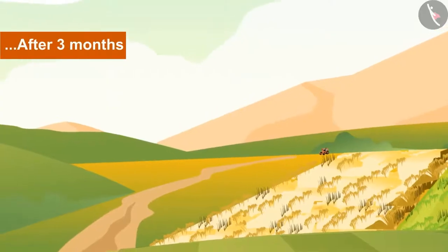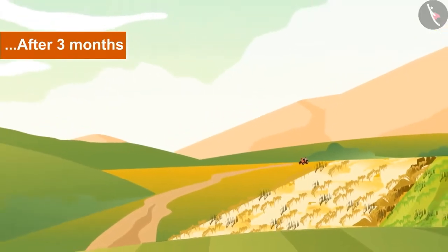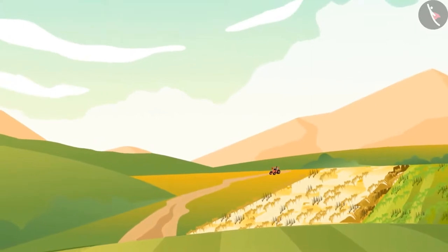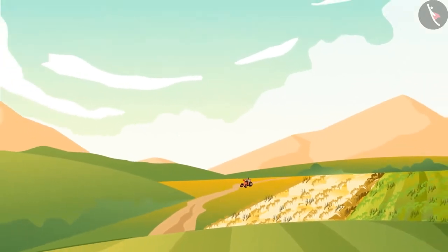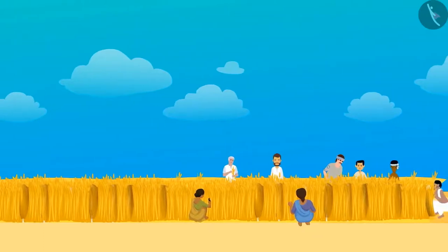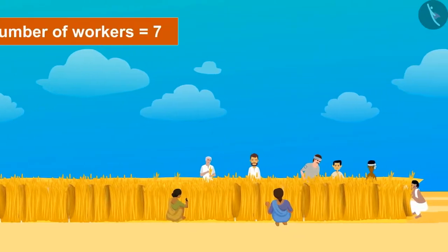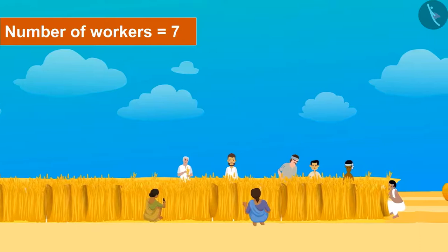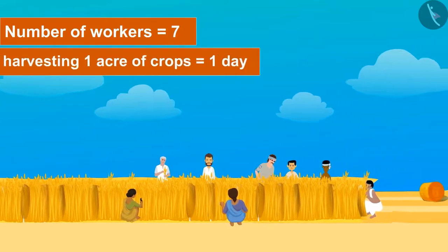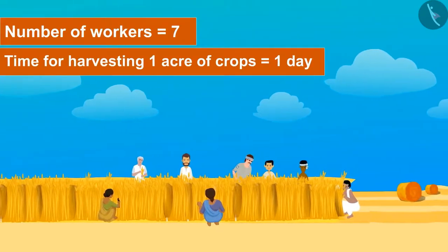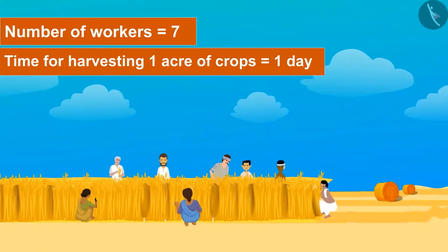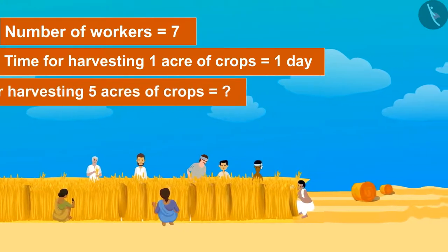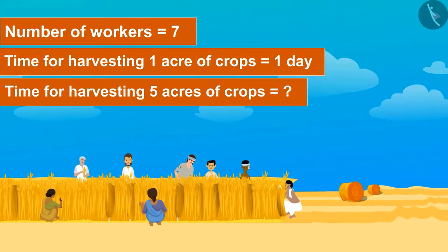After 3 months, see how the pulses crop of Garim is booming. Although it's still time for the wheat crop to get ready for the harvest. Garim called workers to help him to harvest the pulses. Together they harvested 1 acre of crops in a day. So can you tell how much time will they take to harvest 5 acres of crops?